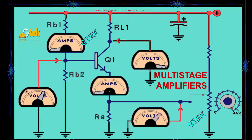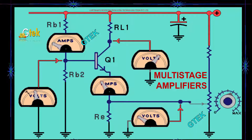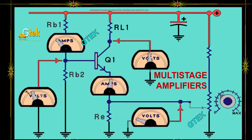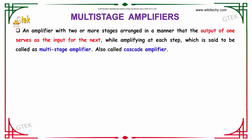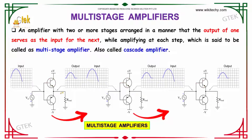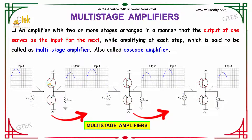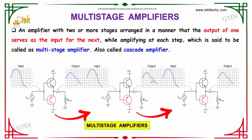The most important and interesting area in the field of transistors and amplifiers is multistage amplifiers. A multistage amplifier is an amplifier with two or more stages arranged so that the output of one stage serves as the input for the next, while amplifying in each stage. This is also called a cascade amplifier.